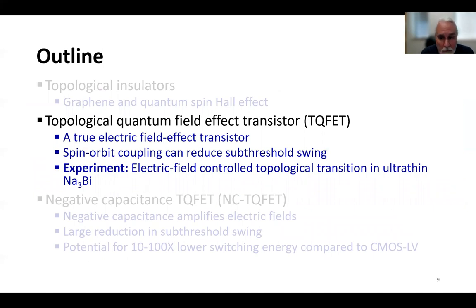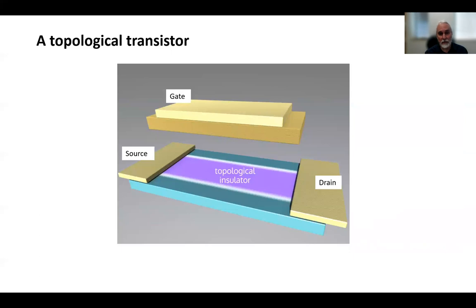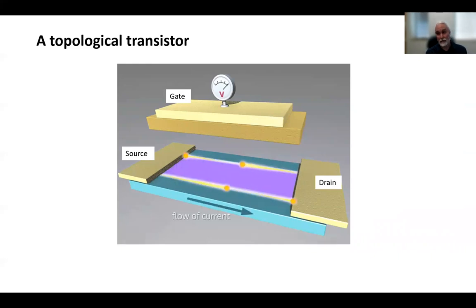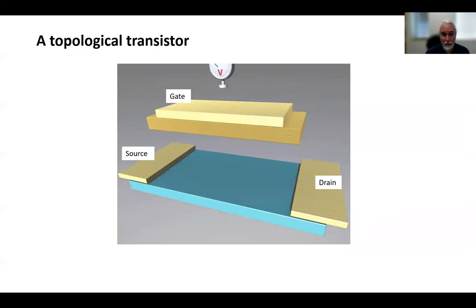Okay, so next I'll talk about why we want to make a transistor out of a topological material, this idea of the topological quantum field effect transistor. So the idea is to have a channel which is a topological material which conducts from source to drain, and it's controlled by a gate, where the voltage applied to the gate electrode will induce an electric field in the channel. That electric field will transform the material's band structure from topological to conventional or vice versa. In the topological state, it would conduct along its edges, ballistically from source to drain, and in the conventional state, it would be insulating and be turned off.